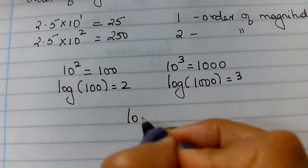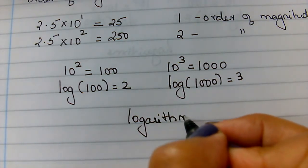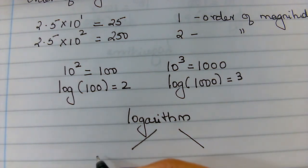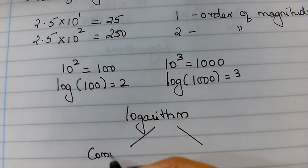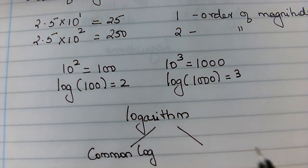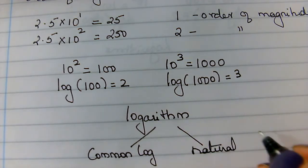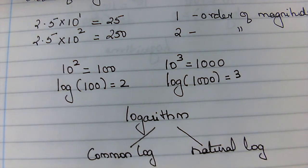So we are interested in two types. Our A-level physics specification is interested in two types of log. One is called the common log or common logarithm and the other is called the natural log or natural logarithm.